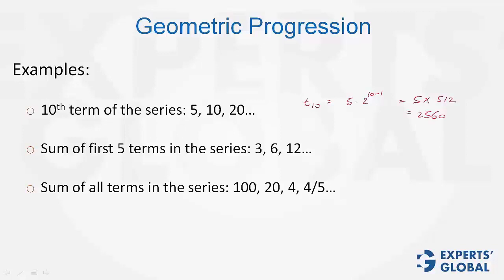Next, the sum of first 5 terms of this series. We know Sn equals a times r to the power of n minus 1 divided by r minus 1. a is 3, r is 2, n is 5. So, this turns out to be 3 times 2 to the power of 5 minus 1 divided by 2 minus 1, which is 3 times 31 divided by 1. This turns out to be 93.